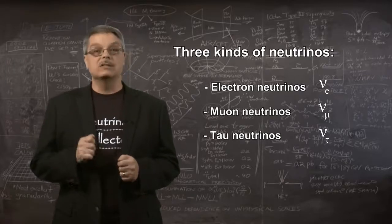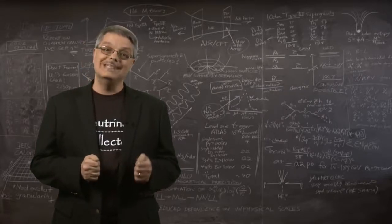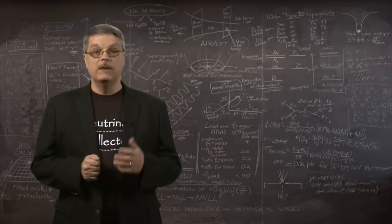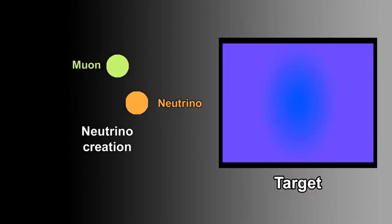The way scientists discovered that there were three different kinds of neutrinos is that neutrinos seem to remember their origins. For instance, an experiment in 1962 created neutrinos in tandem with a muon.